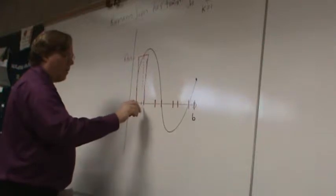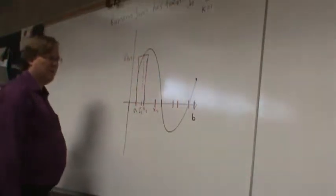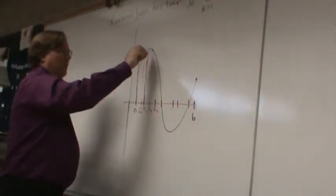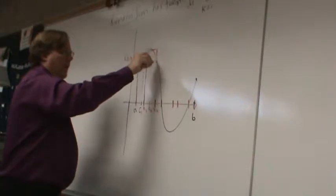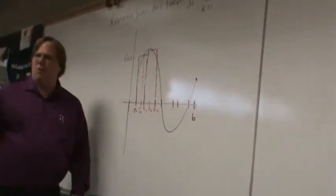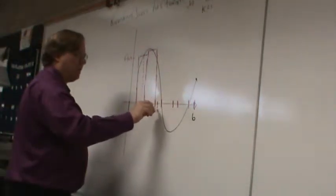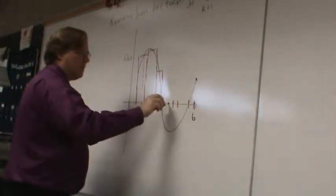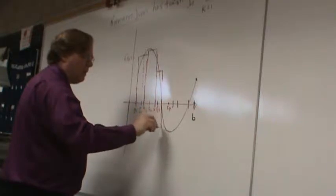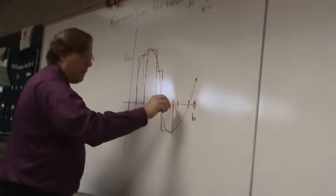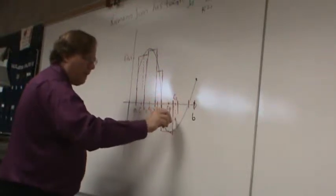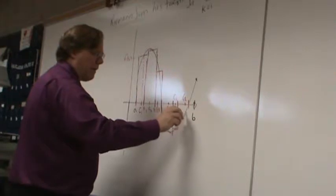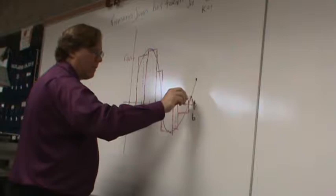Here's my next partition — I'll call this x1 and x2. I'll choose C sub 2 to be kind of towards the middle, so the height of the next rectangle is f of C sub 2, and so on. For every partition I'll choose some random point: C sub 3, C sub 4, C sub 5, C sub 6, and finally C sub 7. The height of each rectangle is f of C sub k for the respective partition.